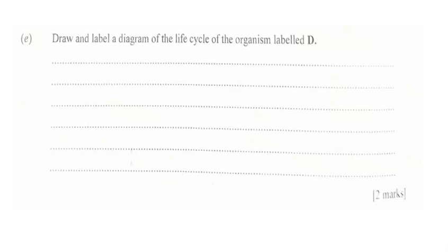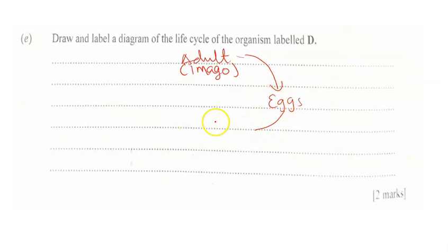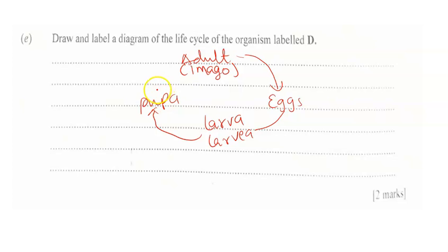Part E asks us to draw and label a diagram of the life cycle of organism D, which is weevil. The life cycle begins with adults — also called imago. Adults lay eggs, and the eggs develop into larvae. The larvae then develop into pupa, and from pupa it matures and becomes an adult weevil again. That is the life cycle of organism D.